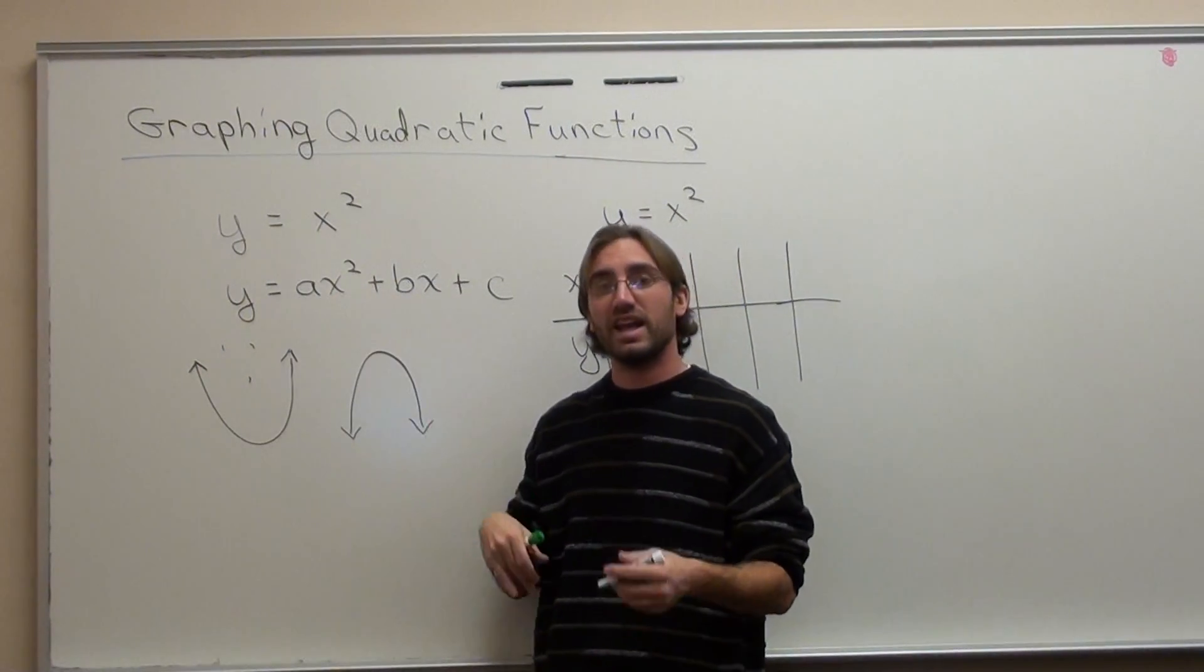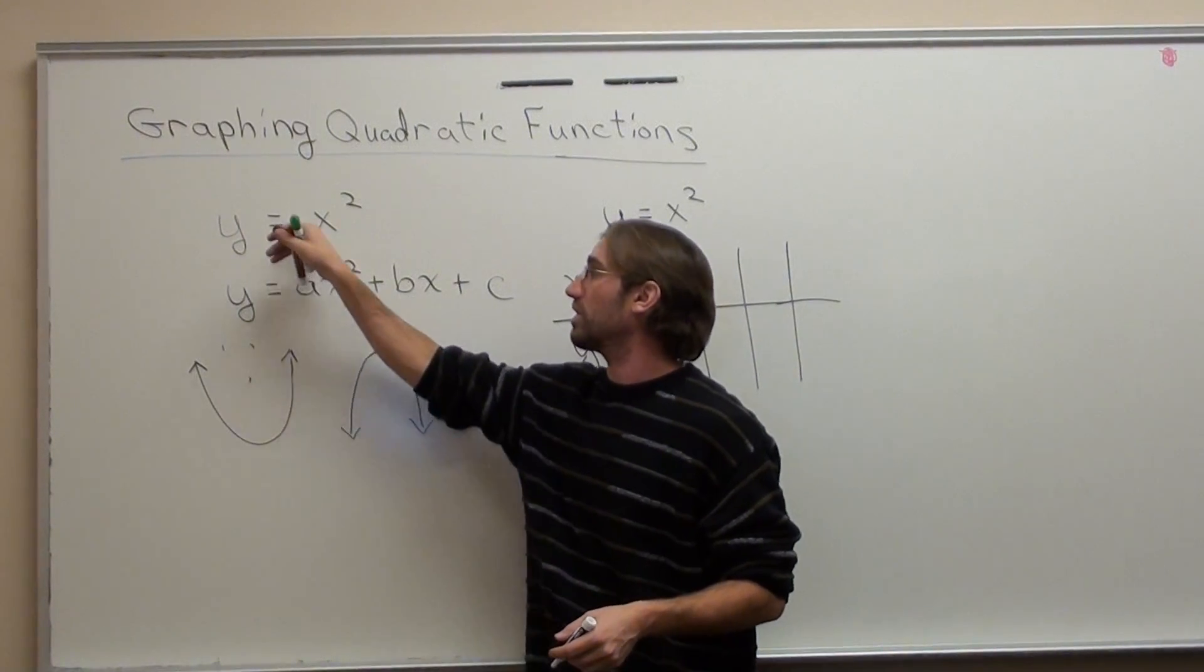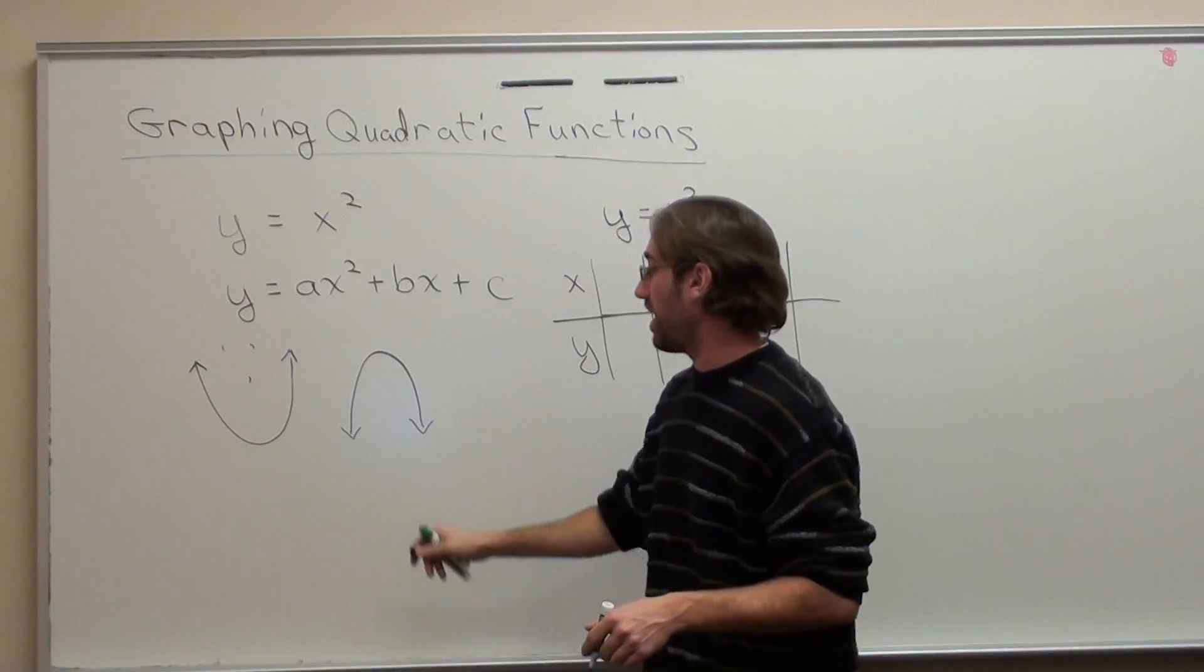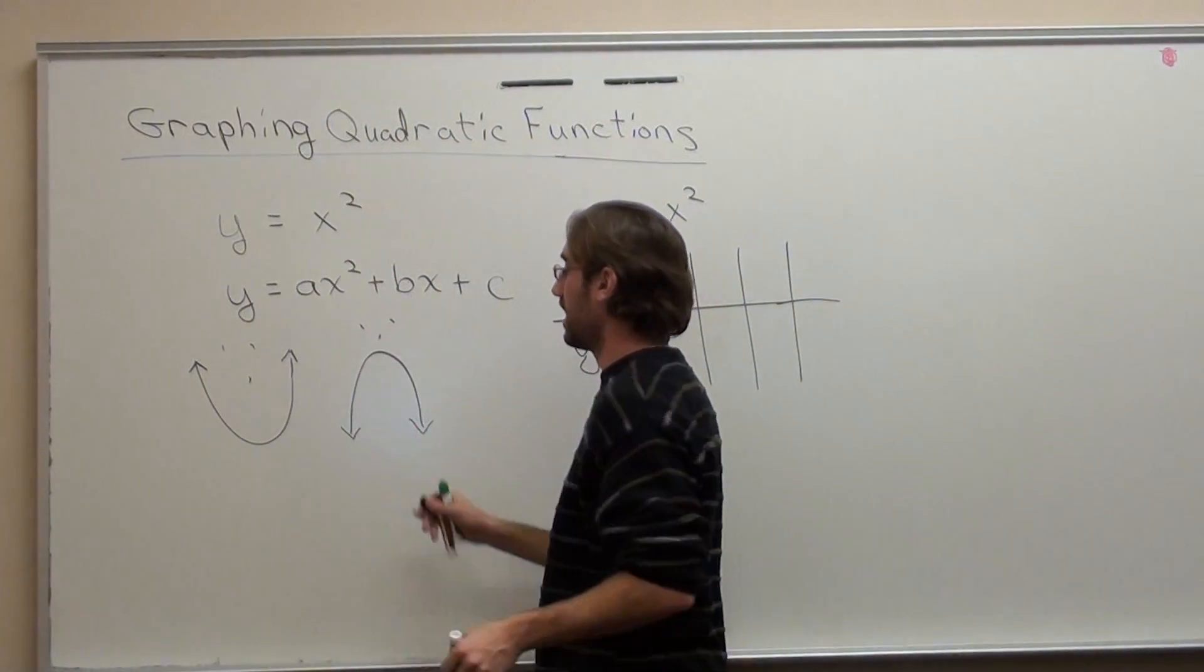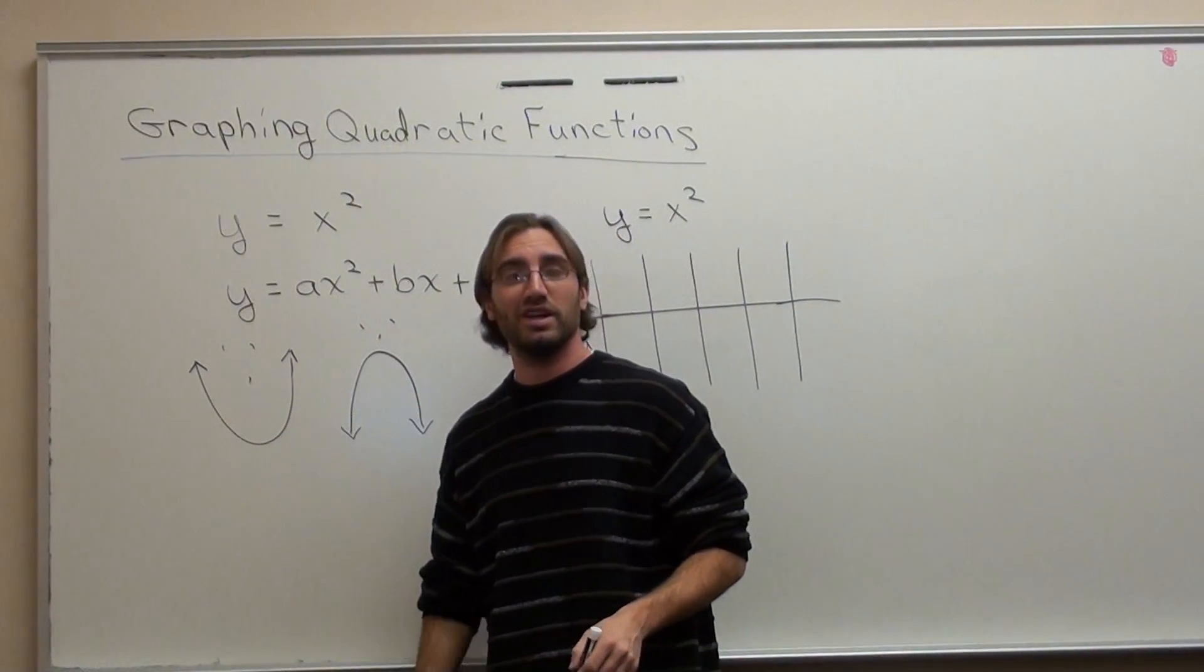If the number in front of the x is negative, or there's a negative in front of that x squared, then the u is sad. That's what I always use. If you're negative, you look like that. If you're positive, you look like that.